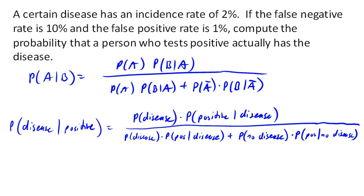So what is the probability that they have the disease? Well, that is in this case 2%, right? It's a 2% incidence rate. What's the probability that they get a positive test given that they have the disease? Well, there's a false negative rate of 10%, which means there's a 90% chance that they'll test positive given they have the disease.